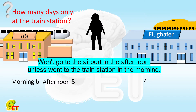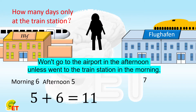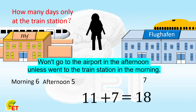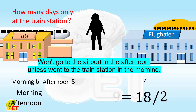The target went to the train station for a total of five plus six, equals 11 times. Plus he went to the airport for seven times, which equals 18 times in total. Your assistant observed a total of 18 times. 18 divided by two equals nine days.